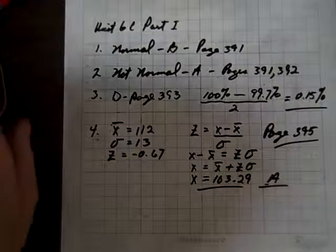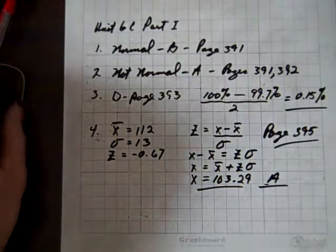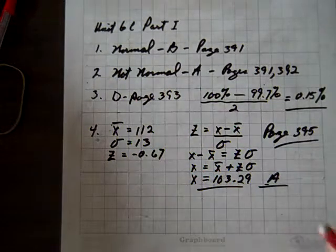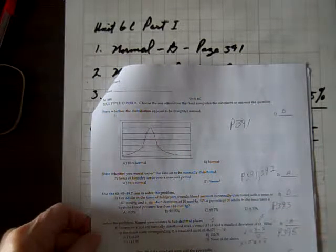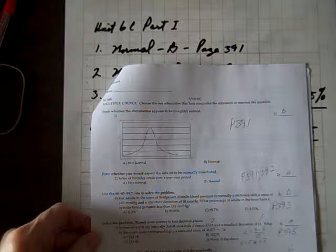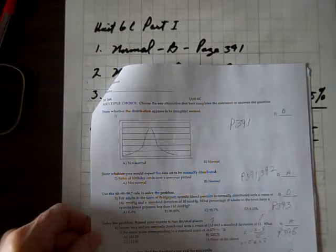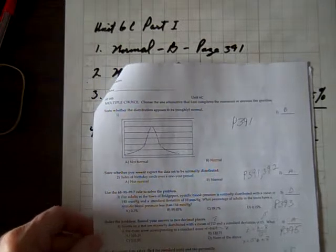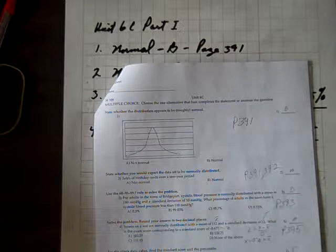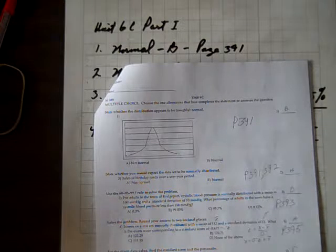We're doing Unit 6C, Part 1, and the first question has to do with determining whether this given graph represents a normal distribution, and it does. If you go to page 391, you'll see that the graph of a normal distribution is a bell-shaped curve.